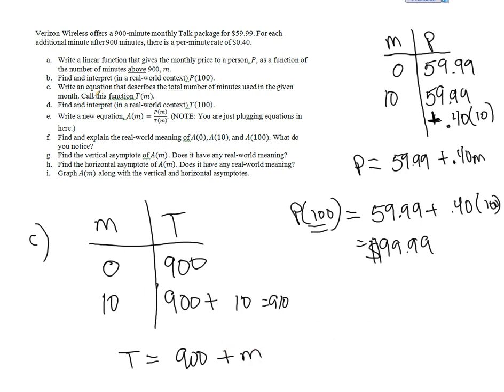If we wanted to find and interpret T of 100, T of 100 would mean if I use 100 overage minutes, that means in total I've used 900 plus 100 is 1,000 total minutes.